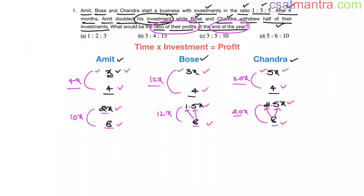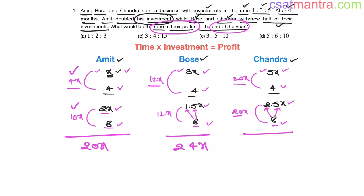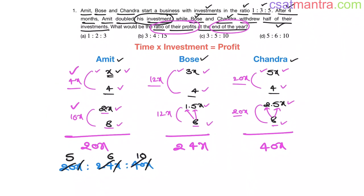What is the total profit each person got at the end of the year? Adding both periods: Amit's profit is 4x + 16x = 20x; Bose's profit is 12x + 12x = 24x; Chandra's profit is 20x + 20x = 40x. The ratio of their profits is 20x : 24x : 40x. Cancelling x and dividing by 4 gives 5 : 6 : 10. So the answer is D.